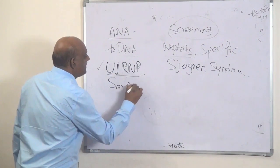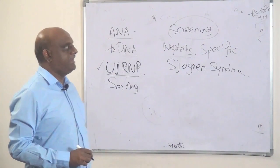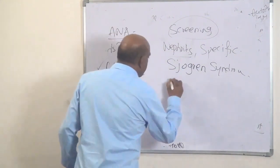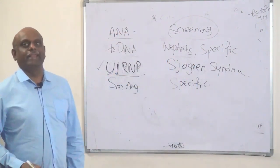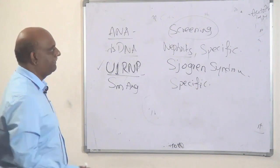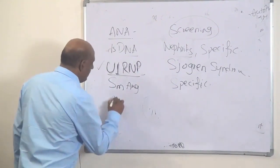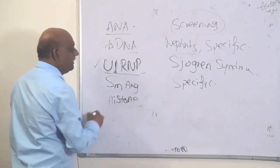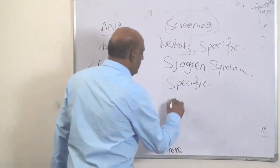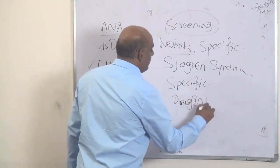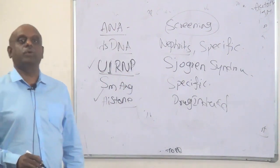Then, Smith antigen — what is the importance of Smith antigen? It is also very specific for SLE, and that is what you have to remember. Then there is histone antibody. What is the importance of histone antibody? In drug-induced lupus, this is a very important antibody to remember.